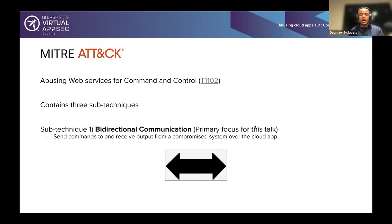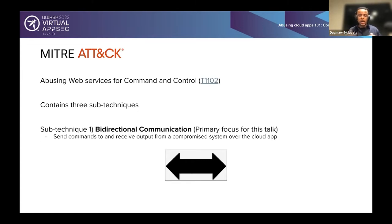Cloud C2 is actually categorized in MITRE ATT&CK as technique T1102 — abusing web services for command and control. It's broken down into three sub-techniques. The first sub-technique is bidirectional communication, which is really what we'll focus on. This is where the attacker is sending commands to and receiving output from a compromised system over a cloud application, so both forward and reverse communication happen over a cloud application instance.